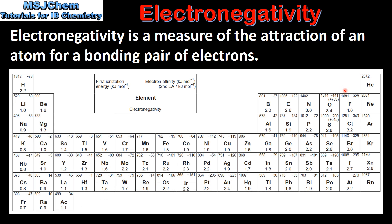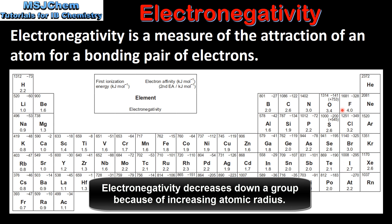Next we'll look at the trend going down a group. If we look at group 17, we can see that as we go down the group the electronegativity value decreases. This is because as we go down a group the number of occupied energy levels increases, which means the atomic radius increases. The bonding electrons are further from the attraction of the nucleus, therefore we see a decrease in electronegativity.